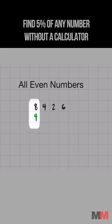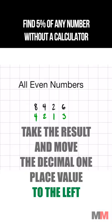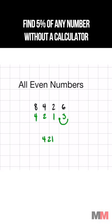Half of 8 is 4, then do that for every place value. Half of 4 is 2, half of 2 is 1, half of 6 is 3. Now that you have that result, take the decimal and move it one place value over: 421.3.